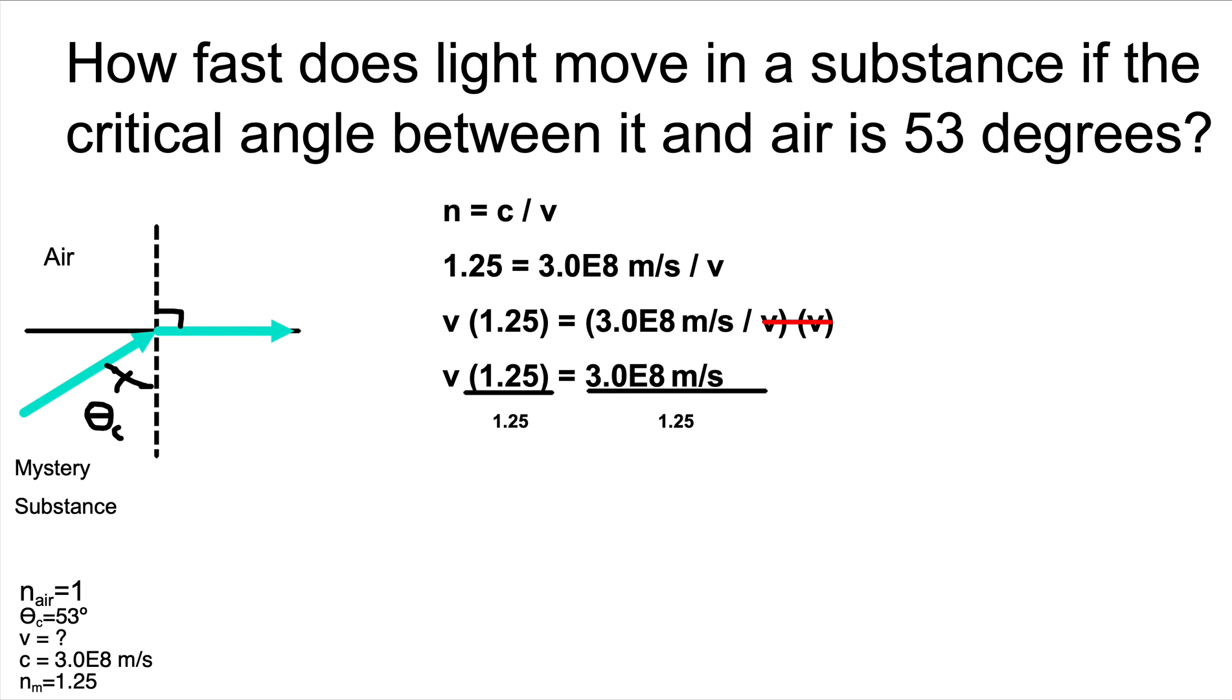To solve for velocity, we need to get it by itself. So now we need to divide both sides by 1.25. 1.25 will cancel from the left-hand side of this problem. All we have to do now is to divide 300 million meters per second by 1.25.